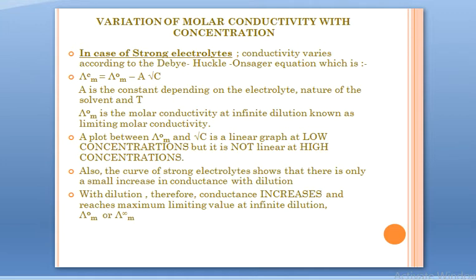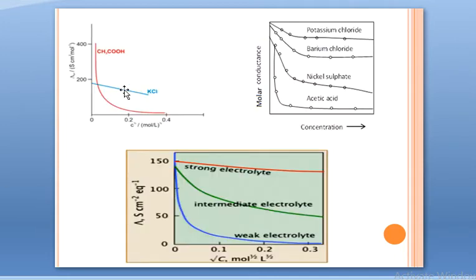From this graph, we observe that when we plot a graph for a strong electrolyte — here I have a plot for KCl — it is more clear in this plot, and the graph is completely linear.